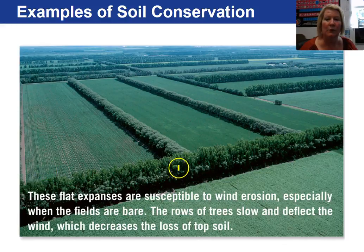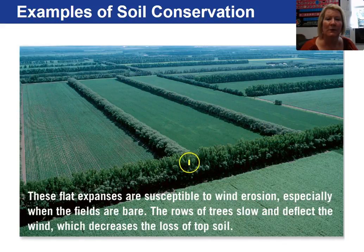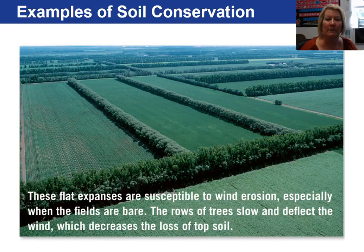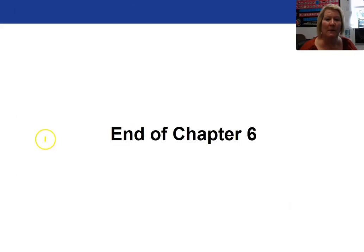These tree lines have been planted because this area is susceptible to erosion by wind. These tree lines provide a windbreak, preserving the soil. That concludes Chapter 6 in Weathering and Soils. Next chapter is Sedimentary Rocks.